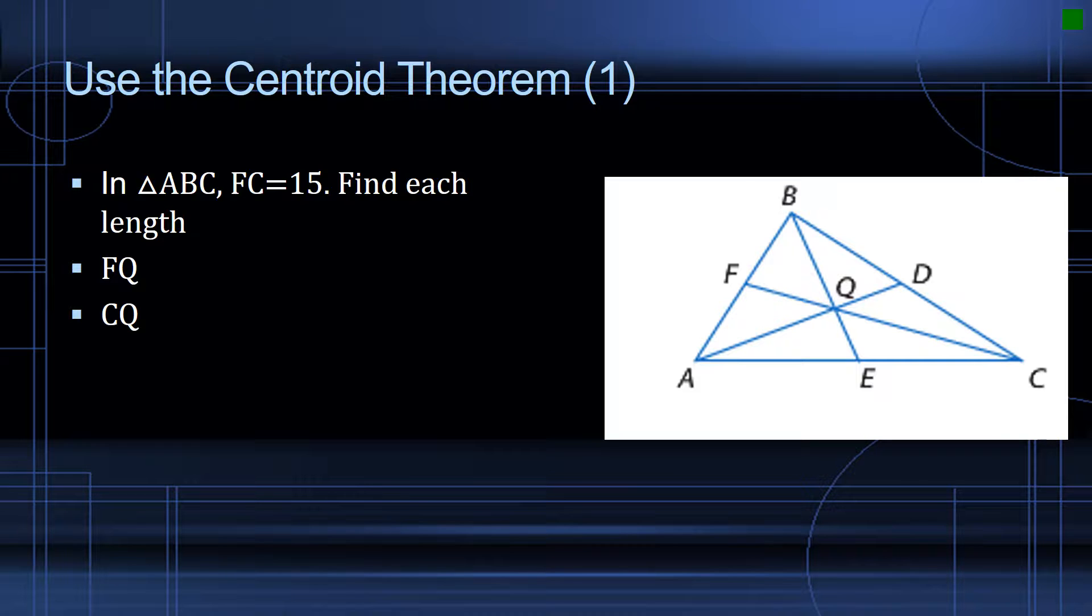A median of a triangle is a line segment that connects the endpoint of a vertex and the midpoint of the side opposite the vertex. As you might imagine, since a triangle has three vertices, there are three medians for every triangle.